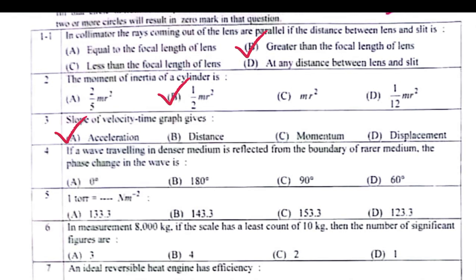One torque equals 133.3 newton meter square. In measurement 8000 kg, if the scale has a least count of 10, then the number of significant figures are one.